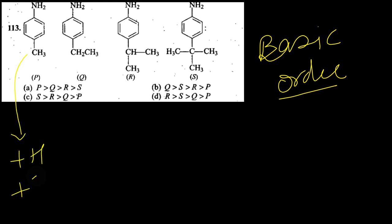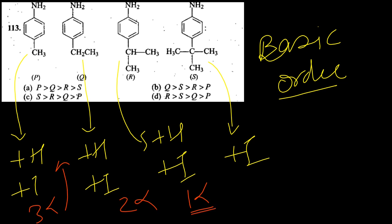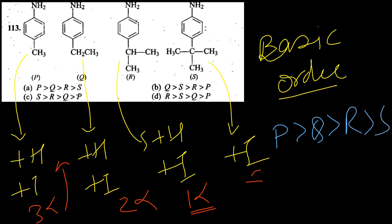Next question: basic order. Here plus M and plus I are operating everywhere, but hyperconjugation depends on the number of alpha hydrogens. Here 3 alpha H, there 2 alpha H, then 1 alpha H, so supply decreases accordingly. The most basic is P (3 alpha H), then Q, then R, then S (only plus I, no hyperconjugation). Order is P > Q > R > S, answer is option A.